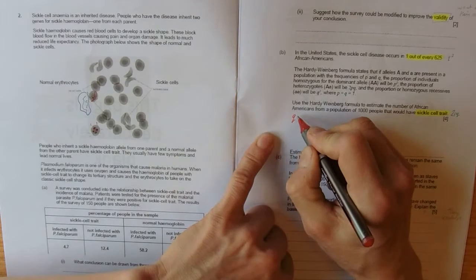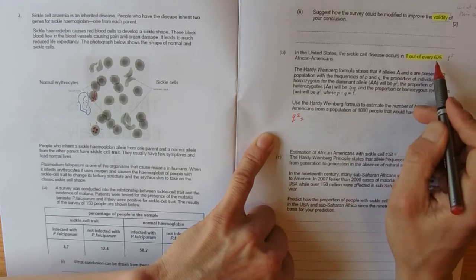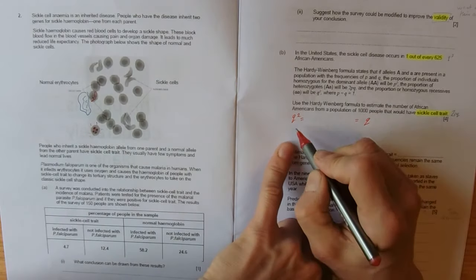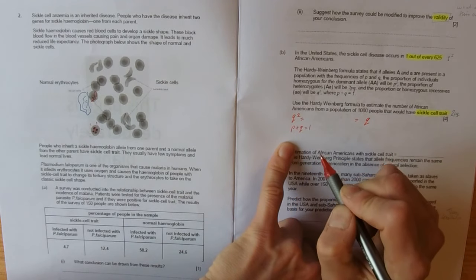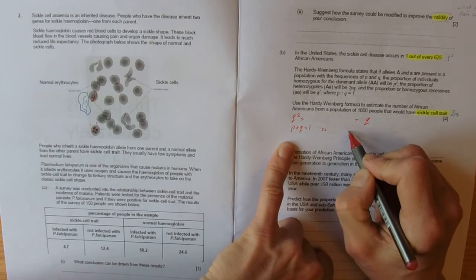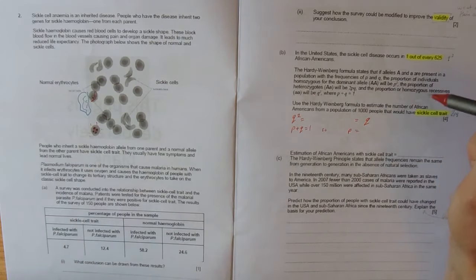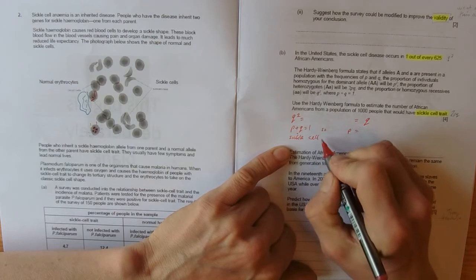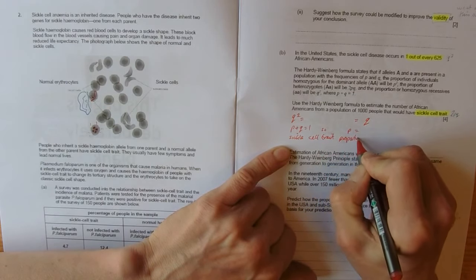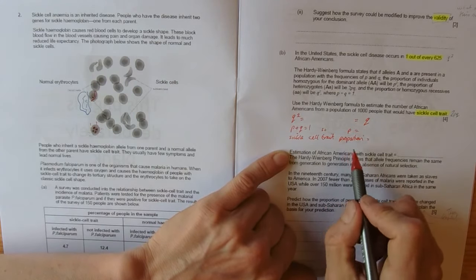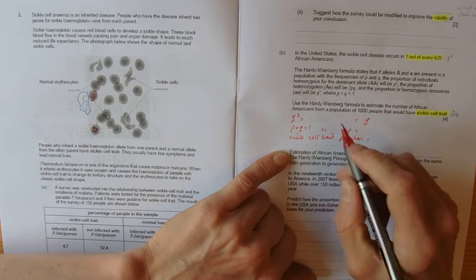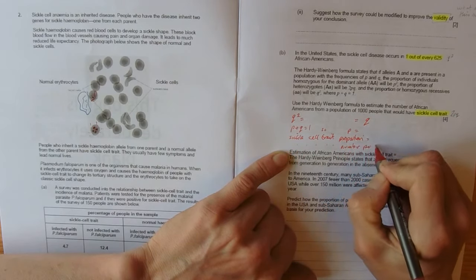So Q squared is that number there. 1 divided by 625. So then you can work out Q. You know that P plus Q equals 1. So then you can work out Q. So then you can find out what P is. And now you know what P and Q are. You can do this to go 2PQ. So that will give you the proportion. So sickle cell proportion. And then that's like a fraction. You need to factor it up for how many per 1,000. So sickle cell number per 1,000.